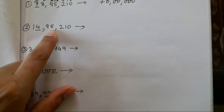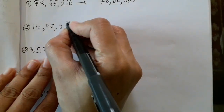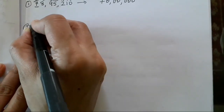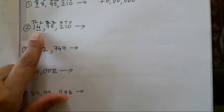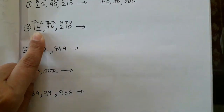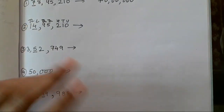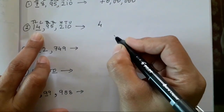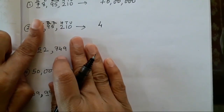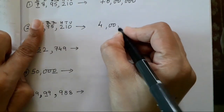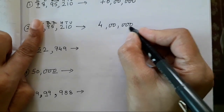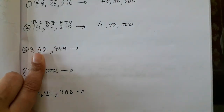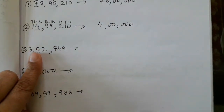Next one: 4, 9, 5, 2, 1, 0. Again: unit, tens, hundred, thousand, ten thousand, lakh, and ten lakh. So four is at the lakhs place. How are you going to write it? Write four first, then put a finger over here and the remaining two zeros. You can read and check: unit, tens, hundred, thousand, ten thousand, lakh — so four is at the lakhs place.